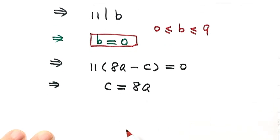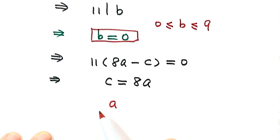So A is a number greater than or equal to 1 and less than or equal to 9. And C is a number greater than or equal to 0 and less than or equal to 9.